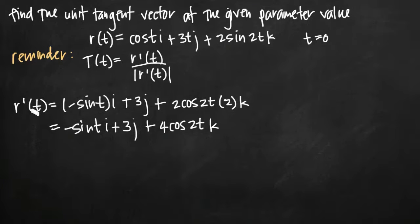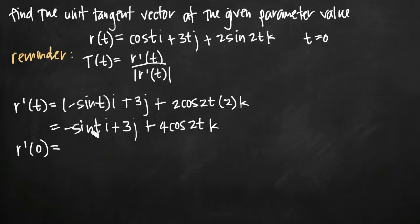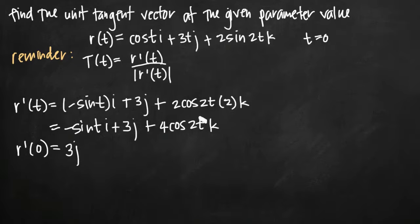This is our derivative function r prime of t, but we want r prime of zero, so we plug in t equals zero. Sine of zero is zero, so the i term drops away. The 3j term has no t to substitute, so it stays as 3j. For 4 cosine of 2t, cosine of zero is 1, so we get plus 4k. Therefore r prime of zero equals 3j plus 4k.